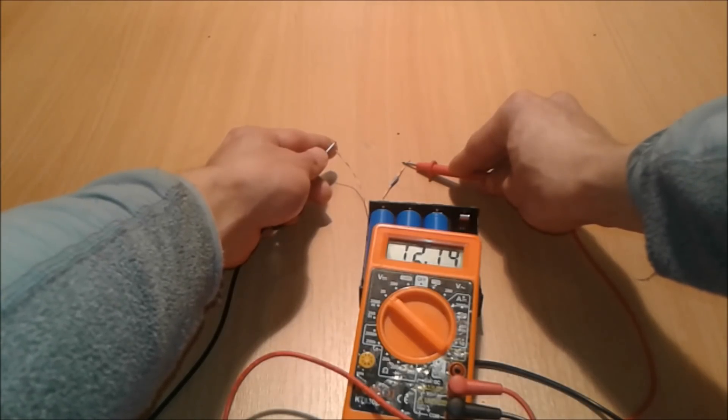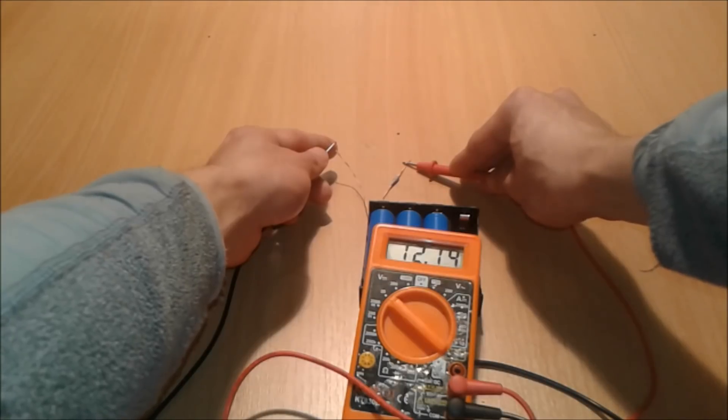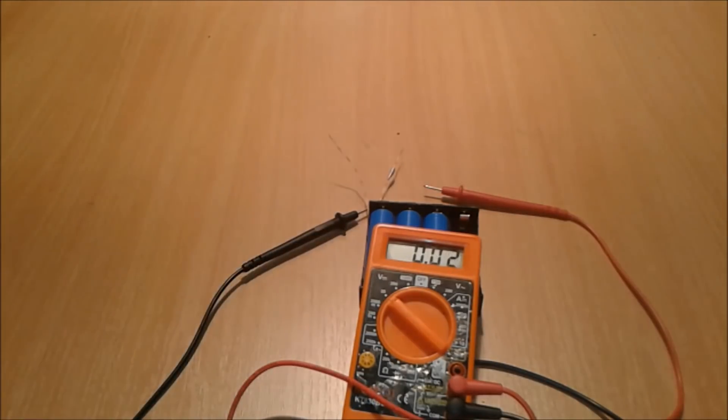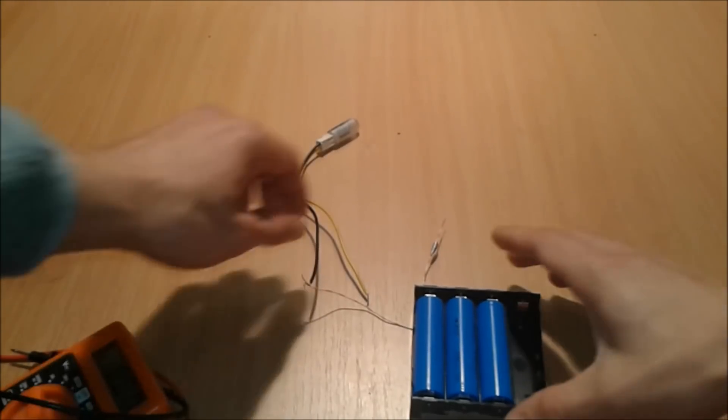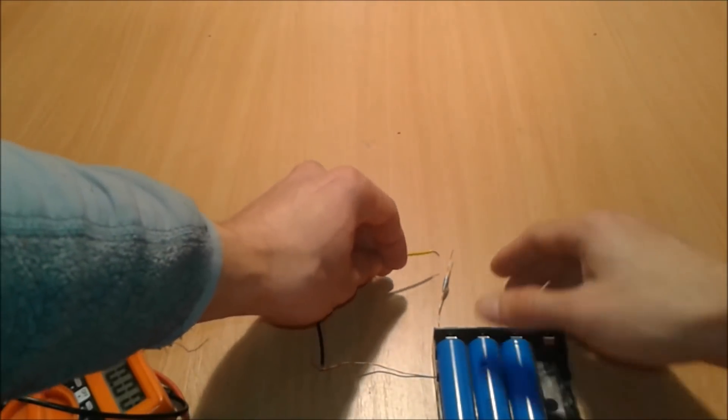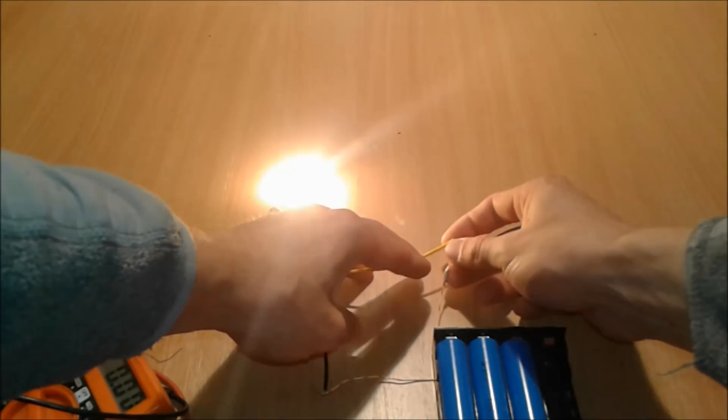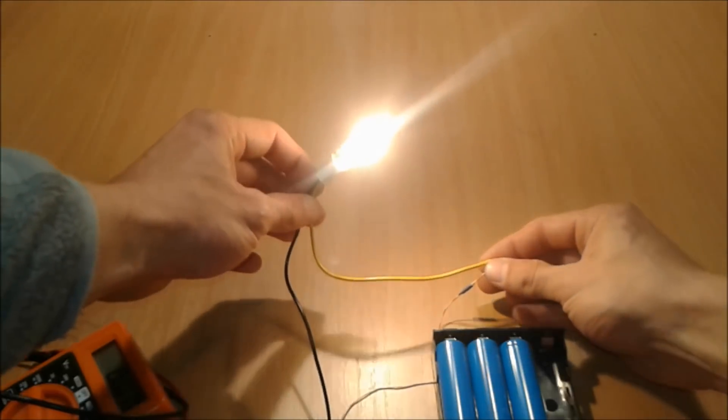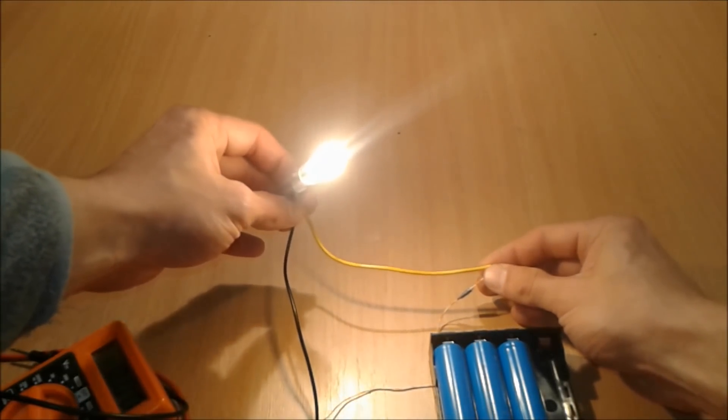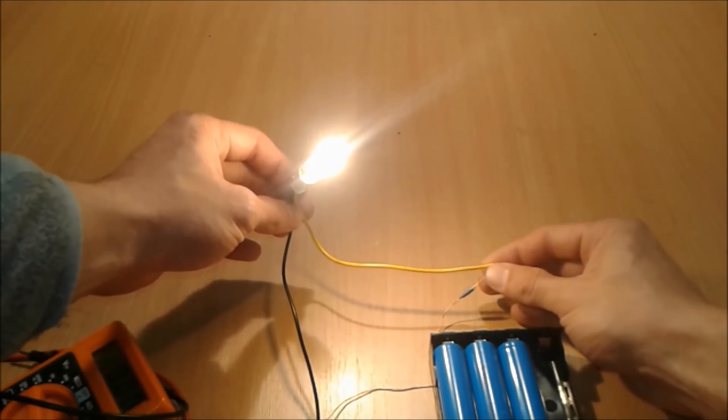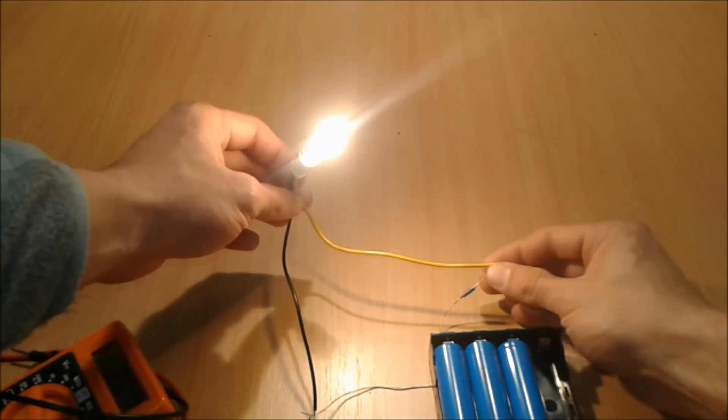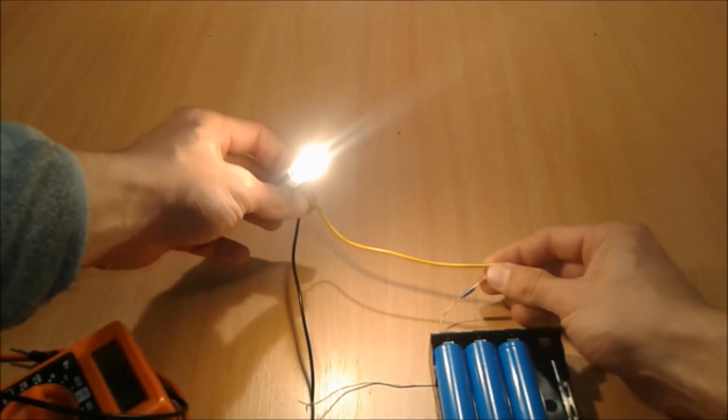We're gonna connect a 12 volt bulb and we're gonna see if it's gonna light or not. Here we go folks, we have a 1.7 watts, 12 volts bulb which is lighting perfectly. This one draws like 140 milliamps and as you can see it's very bright.